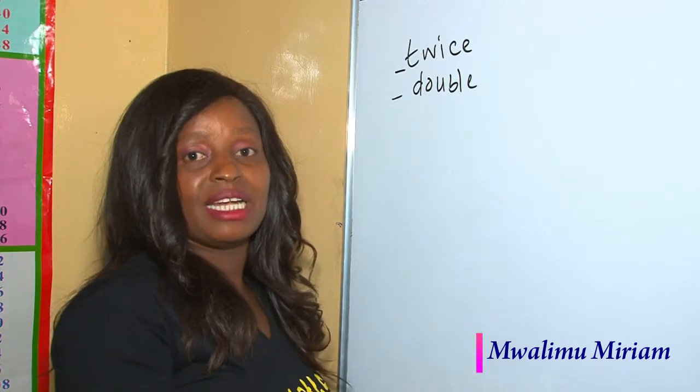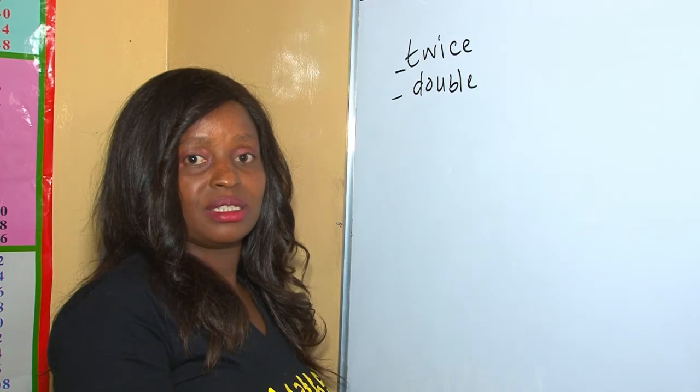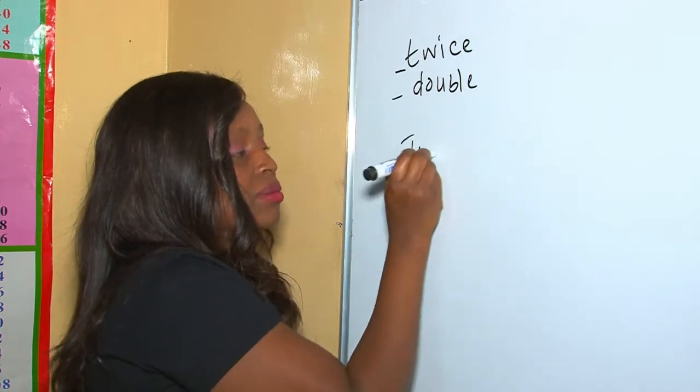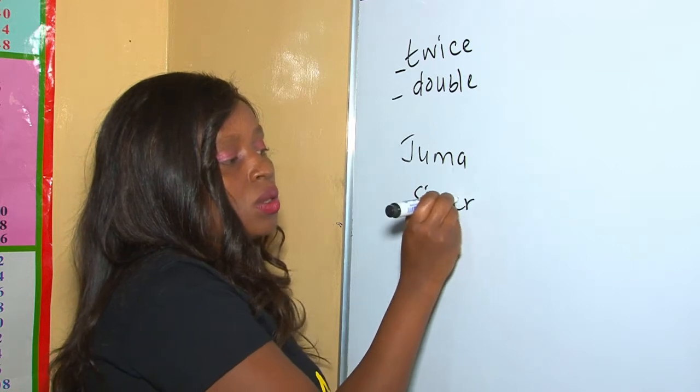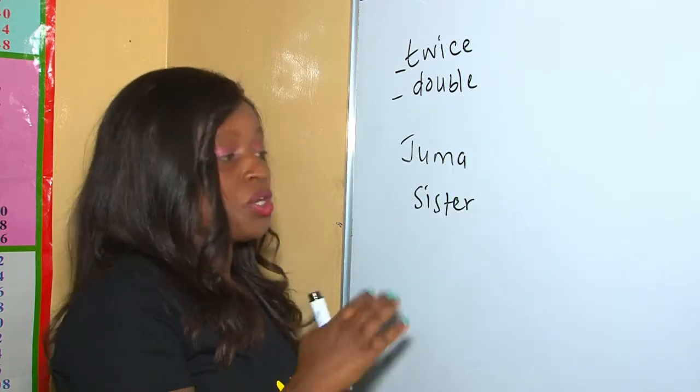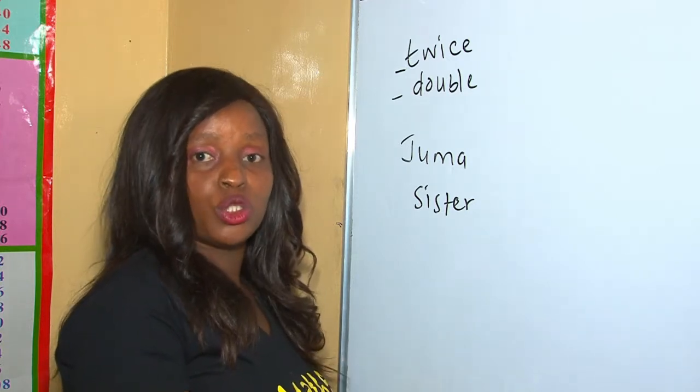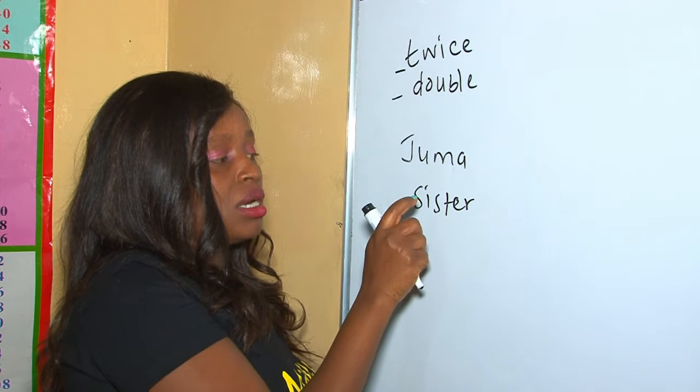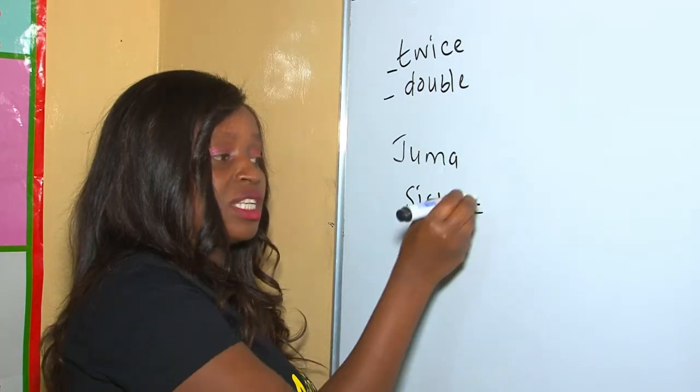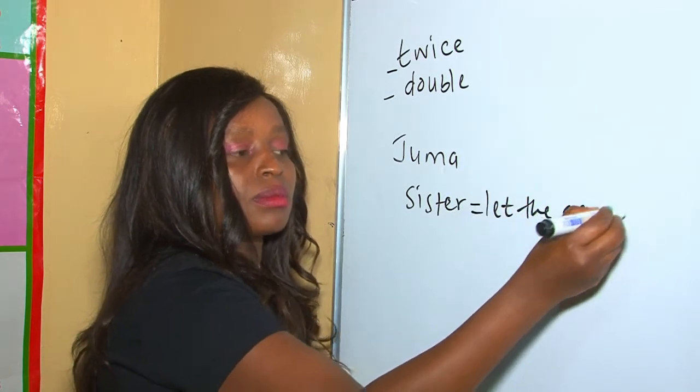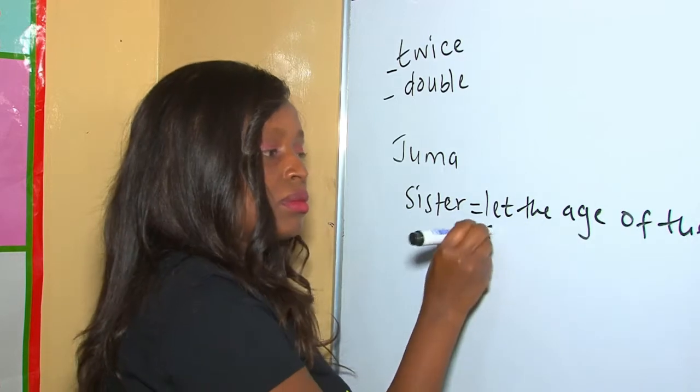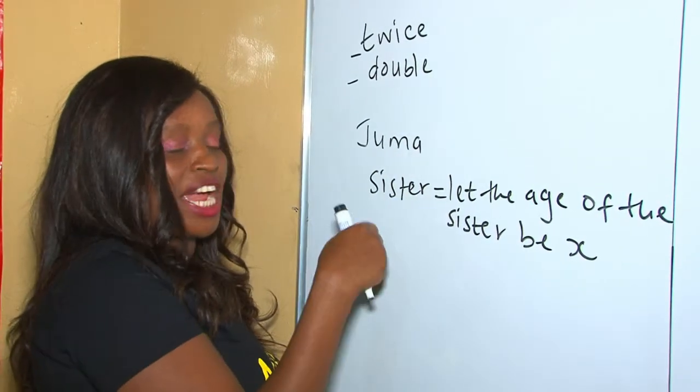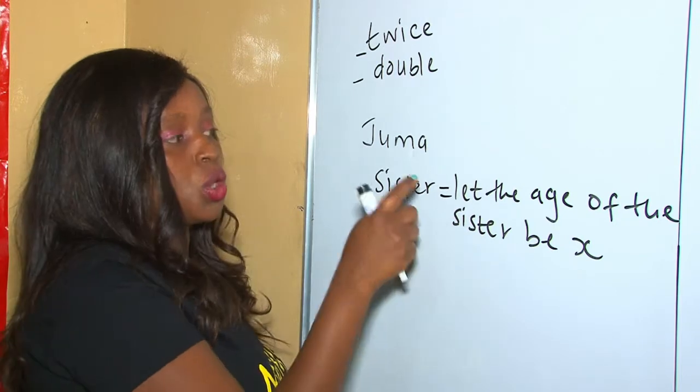Words are basically used to mean multiplication. For instance, Juma is twice as old as the sister. Here we are comparing Juma and sister, and the two are unknowns. We don't know how old the sister is, neither do we know how old Juma is. But I've been given a statement like twice, so Juma is twice the age of the sister. So we can say let the age of the sister be x.